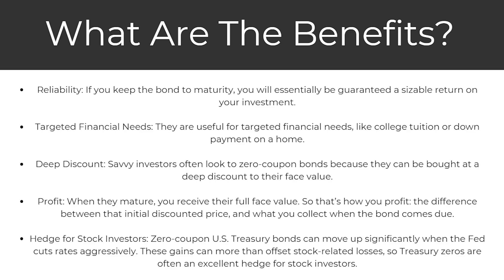The difference between the initial discounted price and what you collect when the bond comes due is your profit. It's also a hedge for stock investors. Zero coupon US treasury bonds can move up significantly when the Fed cuts rates aggressively. These gains can more than offset stock-related losses, so treasury zeros are often an excellent hedge for stock investors.